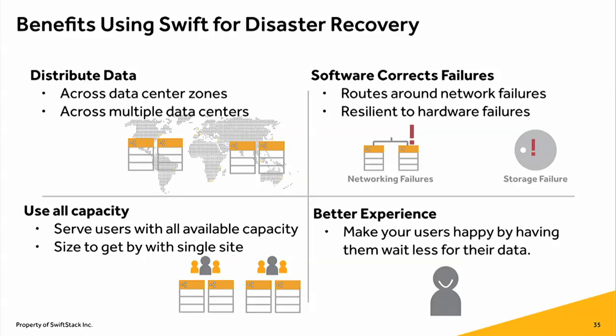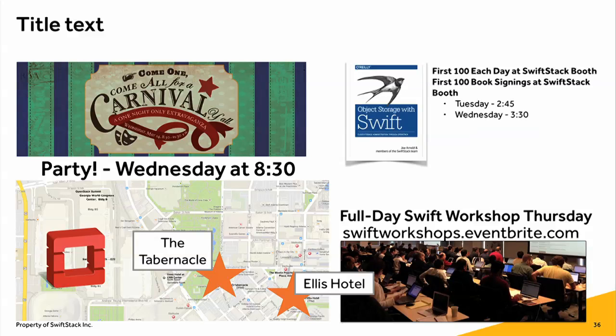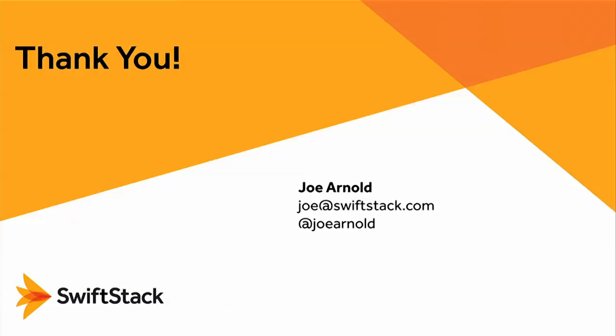Benefits: you can distribute data across data center zones and across multiple data centers. The software corrects for failures — whether it's a networking failure or a drive failure, it happens in software. You can use all your capacity to serve all your users, routing across all available capacity instead of having dedicated disaster recovery equipment. And you can route users to nearby data, giving them data faster and making them happier. Come see us at the party and at the booth for a book. Thank you very much.